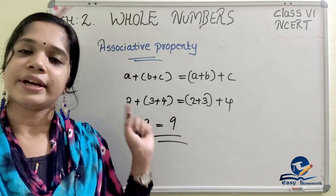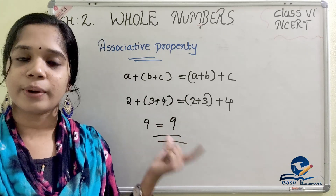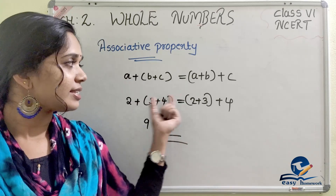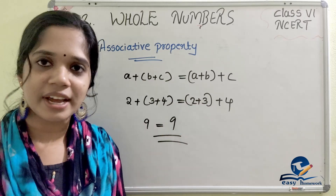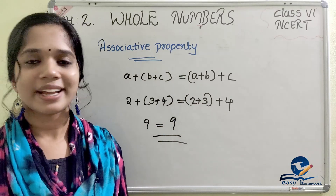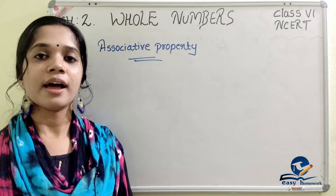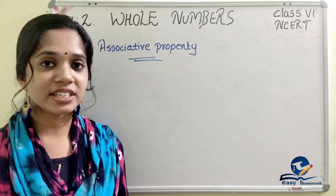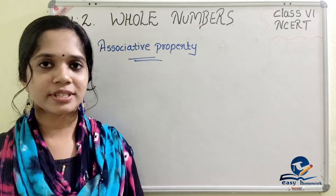No matter the order, the result is the same — it is equal. That is the associative property. Next, multiplication is also associative for whole numbers.